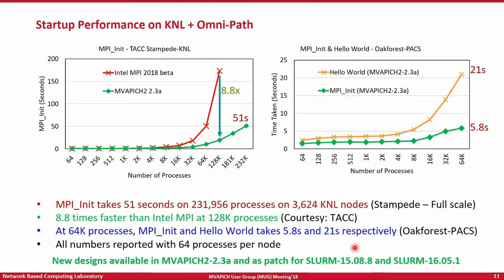Here are some sample results we have been able to obtain for job startup performance. We have significantly improved it. This is at about full system scale on Stampede — a KNL-based cluster. We are able to start up almost a quarter of a million processes on the Stampede supercomputing center in under one minute. We also took similar job startup performance numbers on the Oak Forest PACS system in Japan. At about 64,000 processes, we are able to exit MPI_Init in about 5.8 seconds, and a hello world — meaning all processes have started up and finalized — in under about 20 seconds.